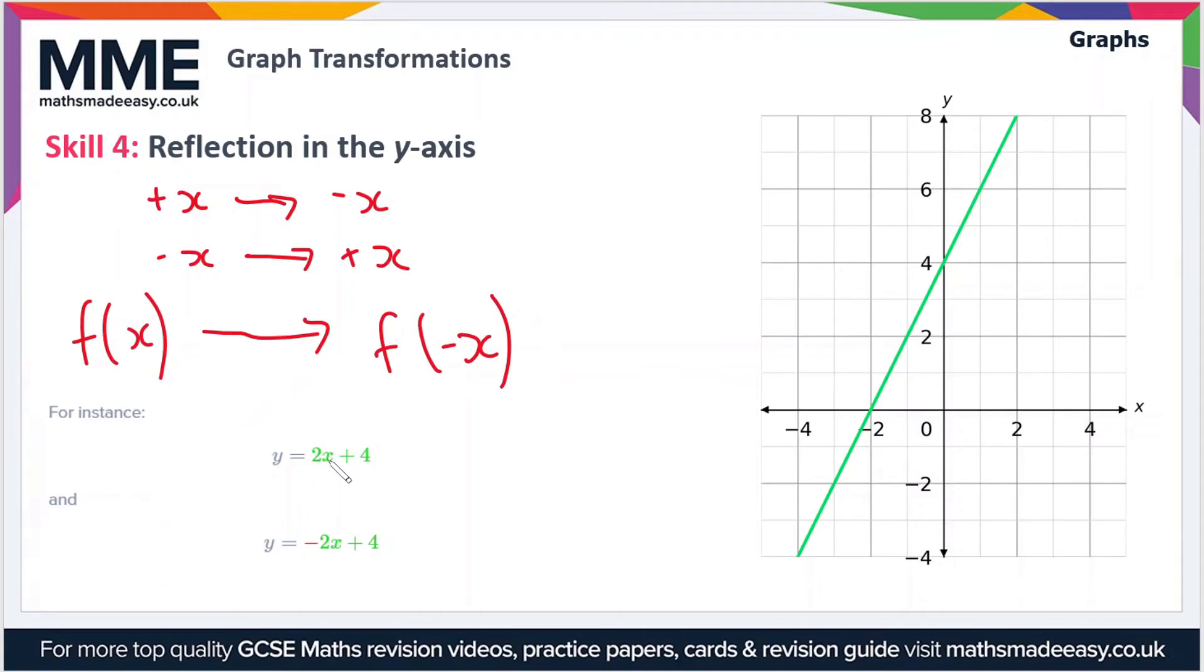For instance, if we have the graph of y = 2x + 4 and we want to reflect this graph in the y-axis, then we make every x value that was positive negative. This comes out as y = -2x + 4. If we plot that graph...